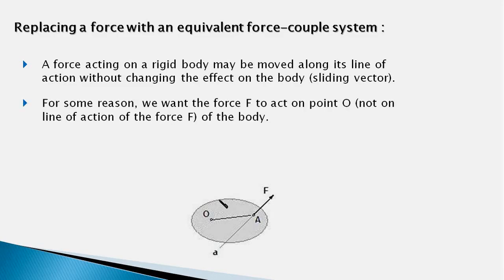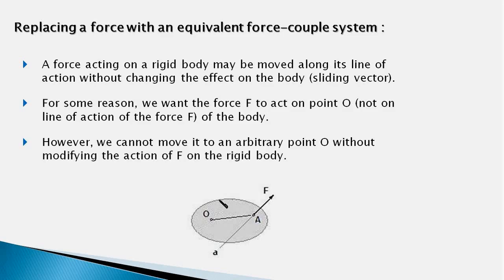But for some reason, maybe for simplification of a problem, we want a force to act on a point which does not lie on its line of action. However, we cannot move it to an arbitrary point O without modifying the action of the force on the body. For example, in this body, force F acts at point A, and for some reason we want to shift the force so that it acts on point O. But we can't simply do it, because the moment of this force about any point on the body is different from the moment of the force acting at point O, and therefore the effect of the force would change.